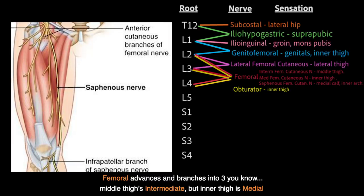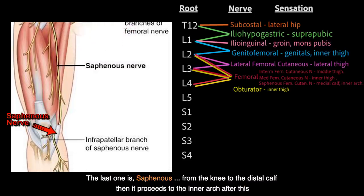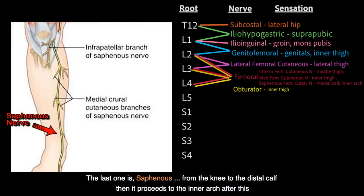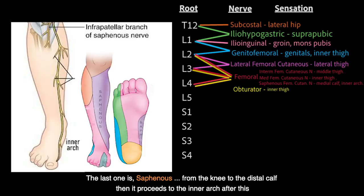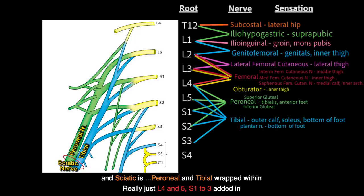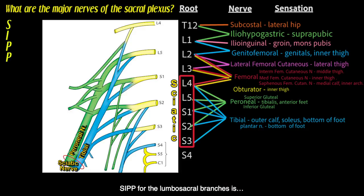Obturator's in the thigh about the size of a hot potato. Femoral advances and branches into 3: middle thigh's immediate, inner thigh's medial. The last one is saphenous — from the knee to the distal, and it proceeds to the inner arch. Sciatic is peroneal and tibial wrapped within, really just L4 and 5, S1 to 3 added in.